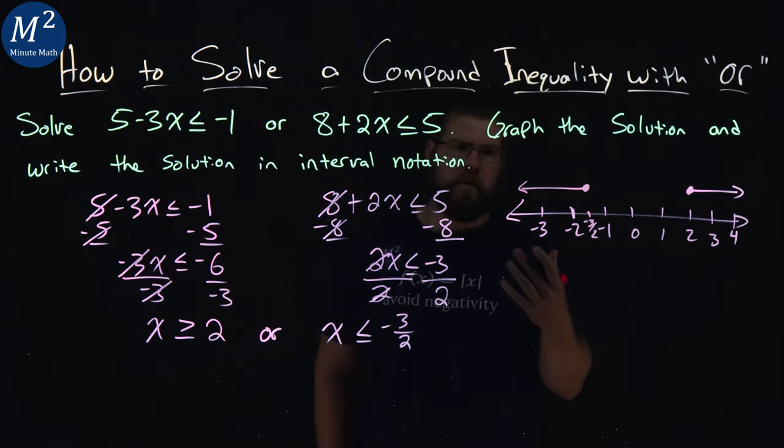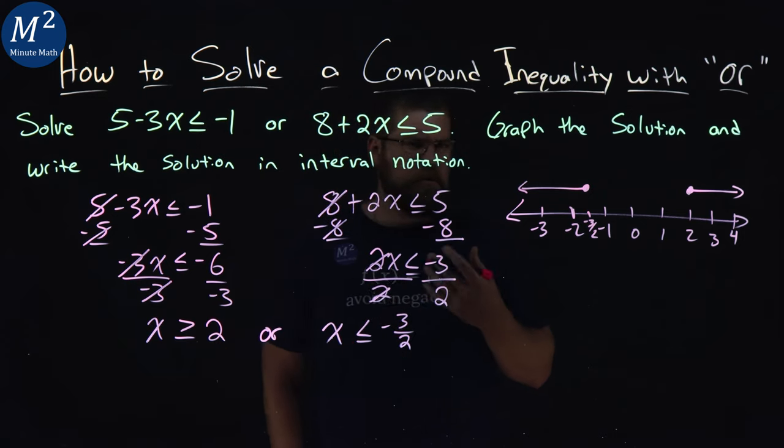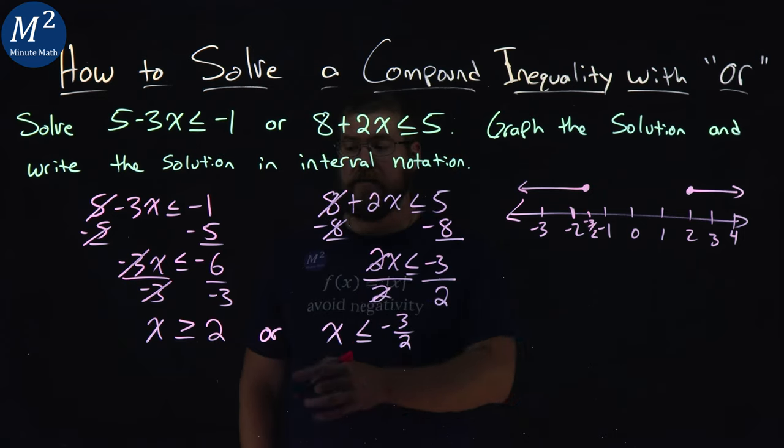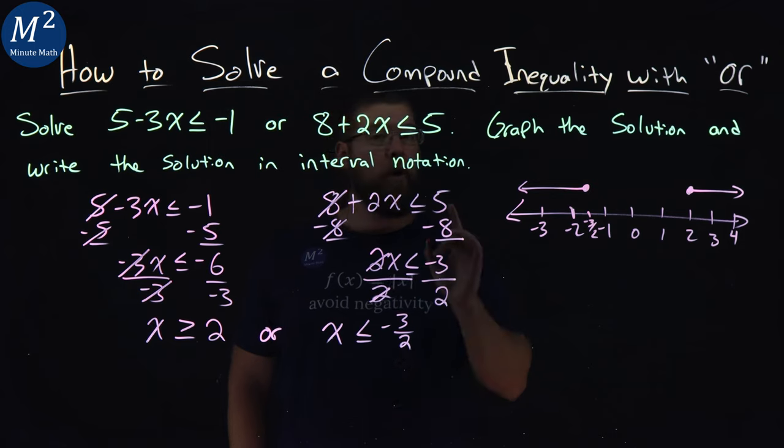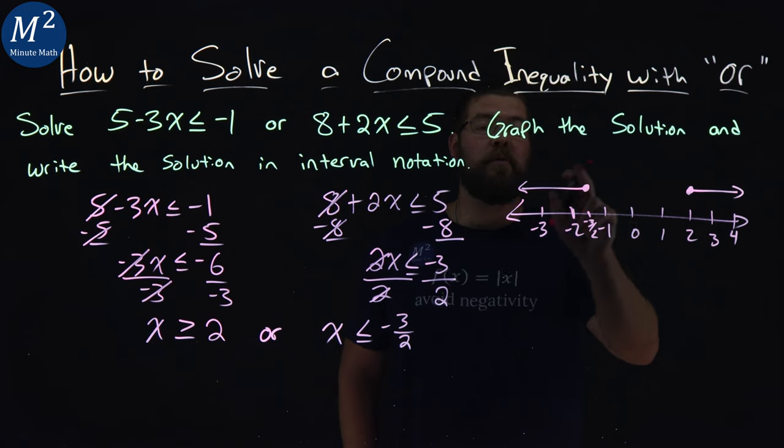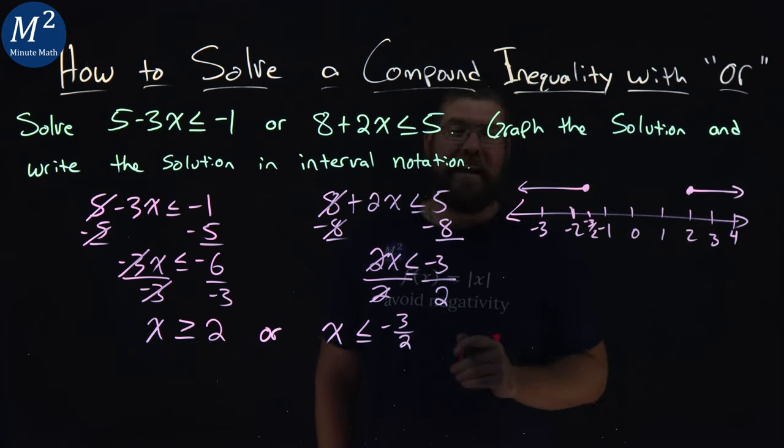And this is where the OR statement really comes in. x has two rules really applied to it. x can be greater than or equal to 2, or x can be less than or equal to negative 3 halves, and that's why we need to have both parts here. This graph shows what x can be.